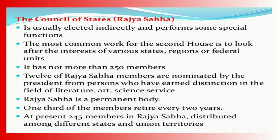Rajya Sabha is a permanent body. One third of the members retire after every two years. At present, there are 245 members in Rajya Sabha, distributed among different states and Union Territories.